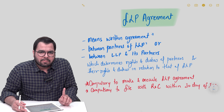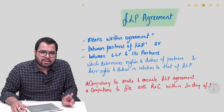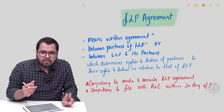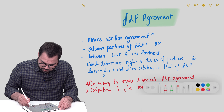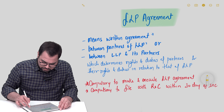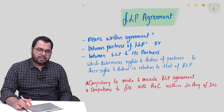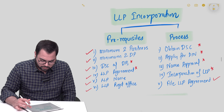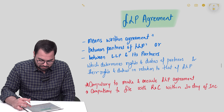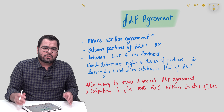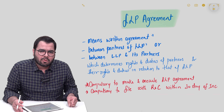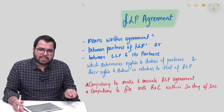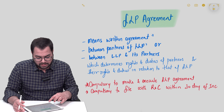Is it compulsory to draft the LLP agreement? Yes. Is it compulsory to file it? Yes. Once the LLP has been incorporated, the LLP agreement has to be filed with the ROC in Form 3 within 30 days of incorporation. So first the agreement has to be drafted with all the relevant clauses, and then it must be filed within 30 days.